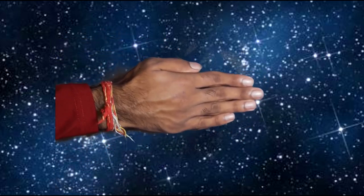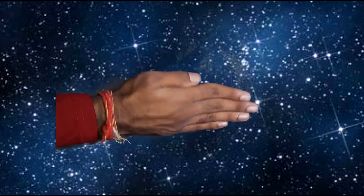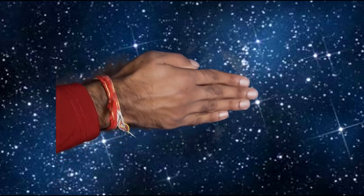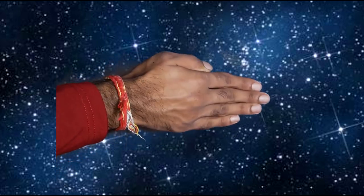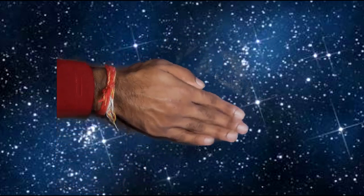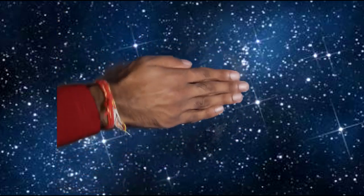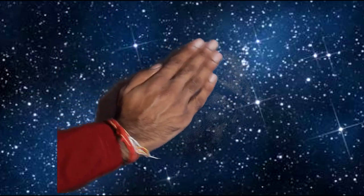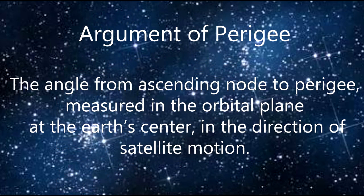If I tell you about the argument of perigee — this motion is controlled by the argument of perigee. So if you see the definition of argument of perigee, it says it is the angle from the ascending node to perigee. The angle from the ascending node to the perigee, measured in the orbital plane at the earth center, in the direction of the satellite motion.